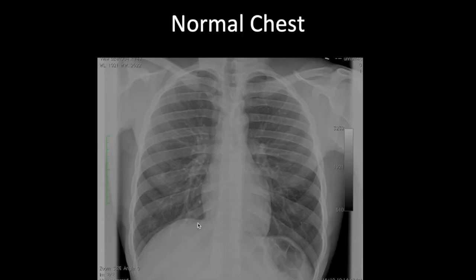You need to know the projection — this is a frontal projection. The reason why we need to know whether it is anterior-posterior or posterior-anterior is because you measure something called the cardiothoracic ratio, which is the widest diameter of the heart divided by the widest diameter of the chest. It should not be more than 50%. If it is more than 50% in a properly done x-ray, then you have cardiomegaly. But it only works in a posterior-anterior view.